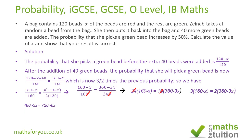Opening up our brackets, we have 480 minus 3X is equal to 720 minus 6X. Taking minus 6X across to the left-hand side and 480 across to the right-hand side, the signs change, so we have 6X minus 3X equals 720 minus 480. That becomes 3X equals 240. Dividing both sides by 3, we end up with X equals 80.